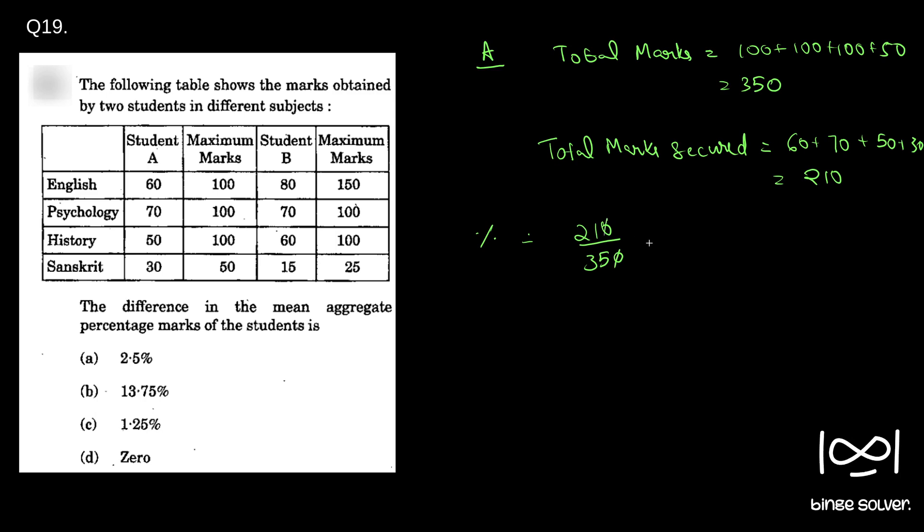21 by 35. So if you cancel it with 3, you get 3 by 5, which is 60 percentage, right? 60 percentage. 3 by 5 is 0.6, which is 60 percentage. So you will get 3 by 5 if you divide both sides by 7.